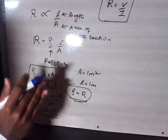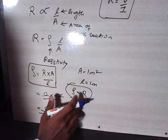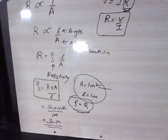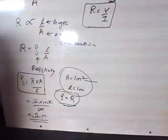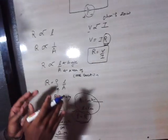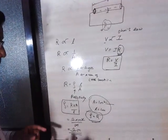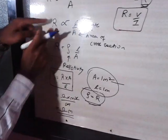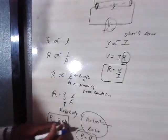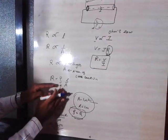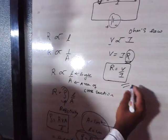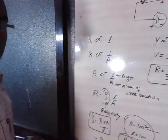So resistivity is nothing but the resistance of a wire when the area of cross-section is one meter squared and the length of the wire is one meter. In that case, resistivity equals resistance. Importantly, resistivity does not depend on area and length — resistance depends on length and area, but resistivity doesn't. It is the constant part of the equation. Please keep this in mind — these are the basic concepts of electricity in physics.